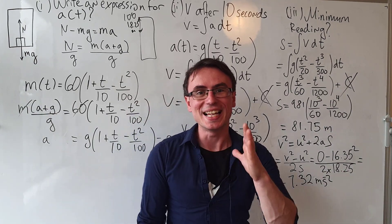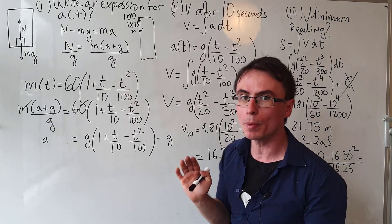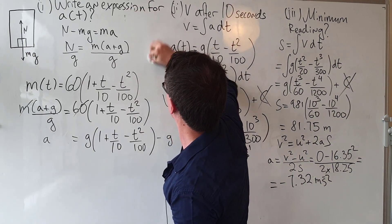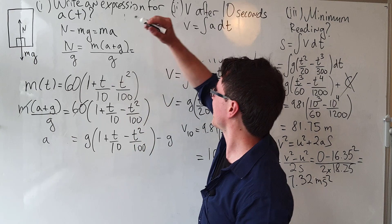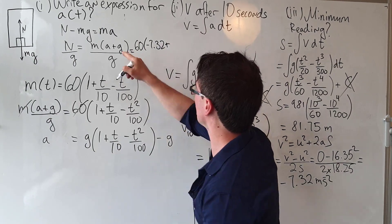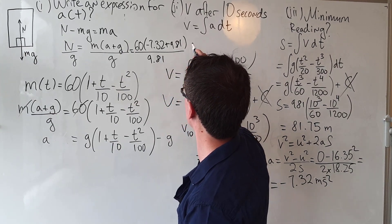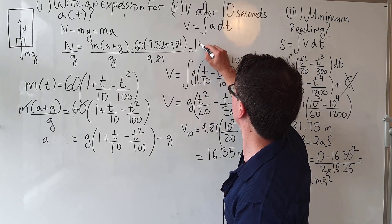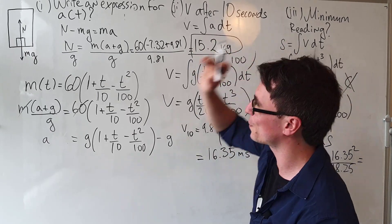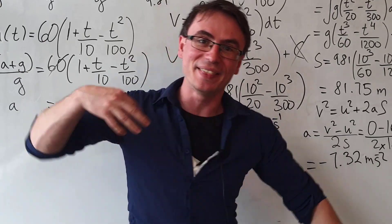This is the minimum acceleration. To find the minimum reading, recall the reading equals N/g. Plugging in: 60 times (−7.32 + 9.81) divided by 9.81, we get 15.2 kilograms as the perceived reading. This is our final answer. To continue, have a look at more problems from the same Physics Olympiad in the next video.